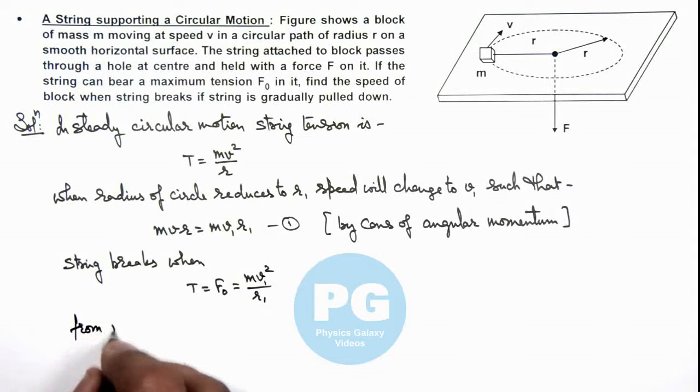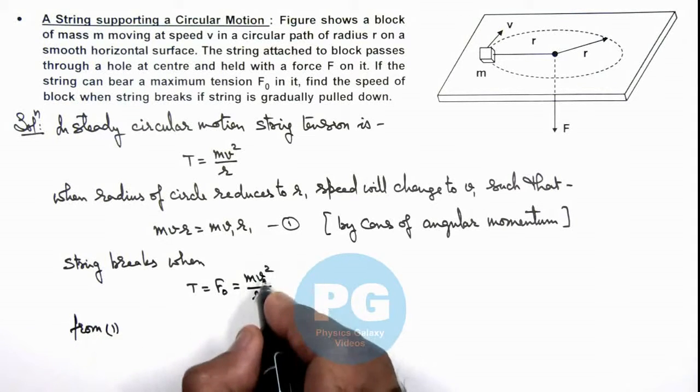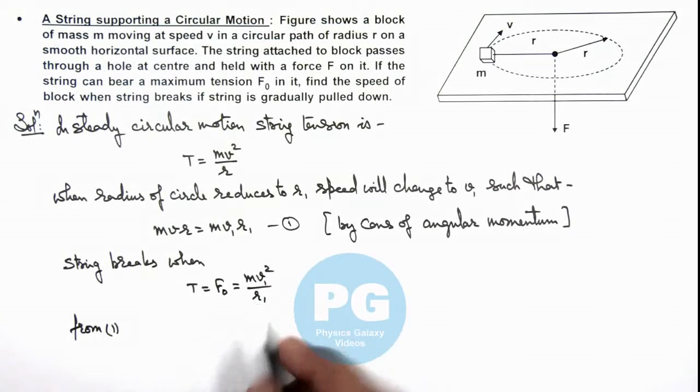Now from equation 1, we can substitute the value of v1 or we can substitute the value of r1 over here. Then we can see this gives us F_not is equal to m v1 squared divided by r1, we can write as v r by v1.